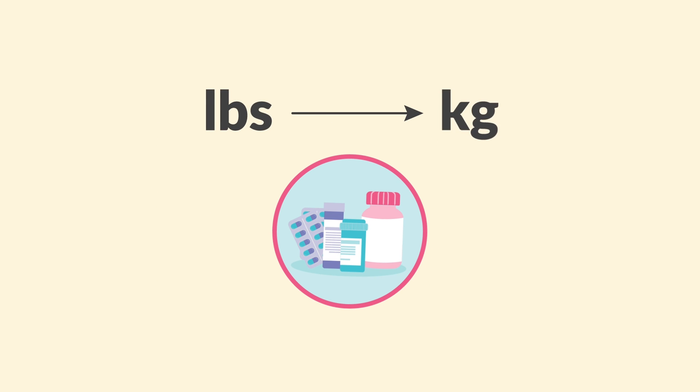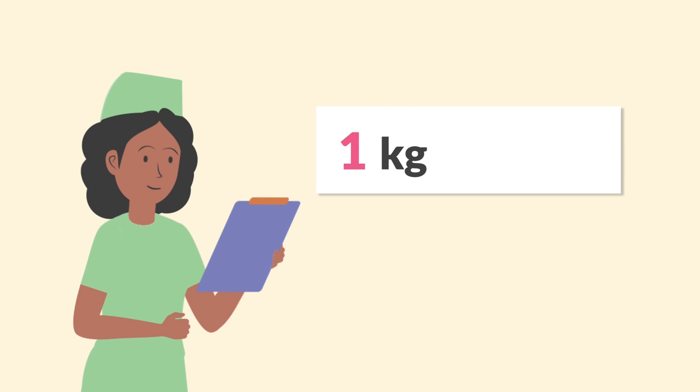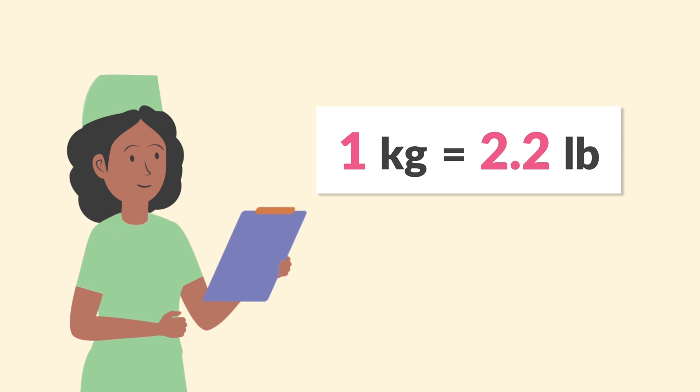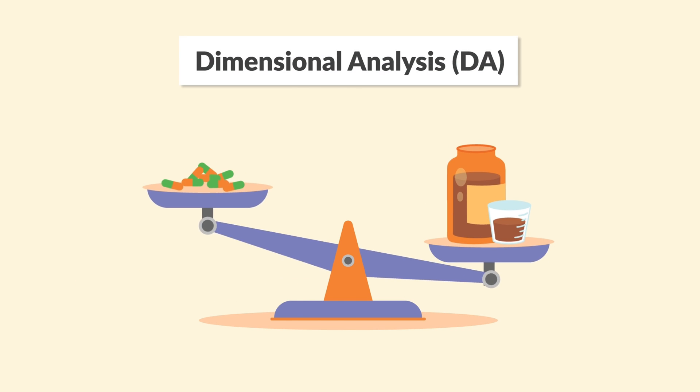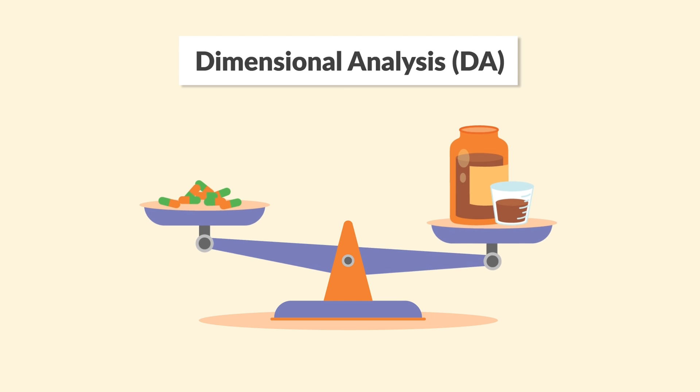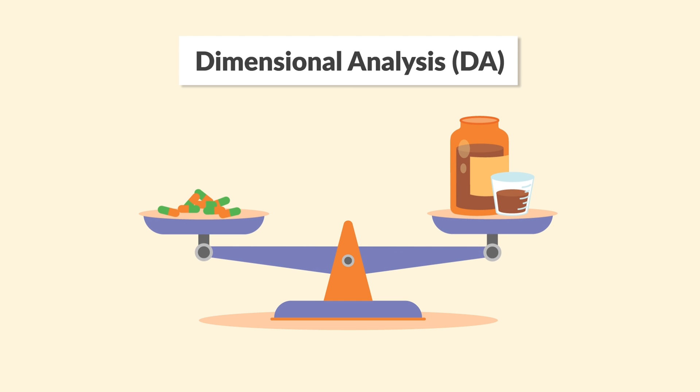Weight is often converted from pounds to kilograms for dosage calculations. One kilogram is 2.2 pounds, and that's a very important conversion to memorize. For dimensional analysis, or DA, this is a calculation method that uses a series of equivalent conversion factors for one system of measurement to another.